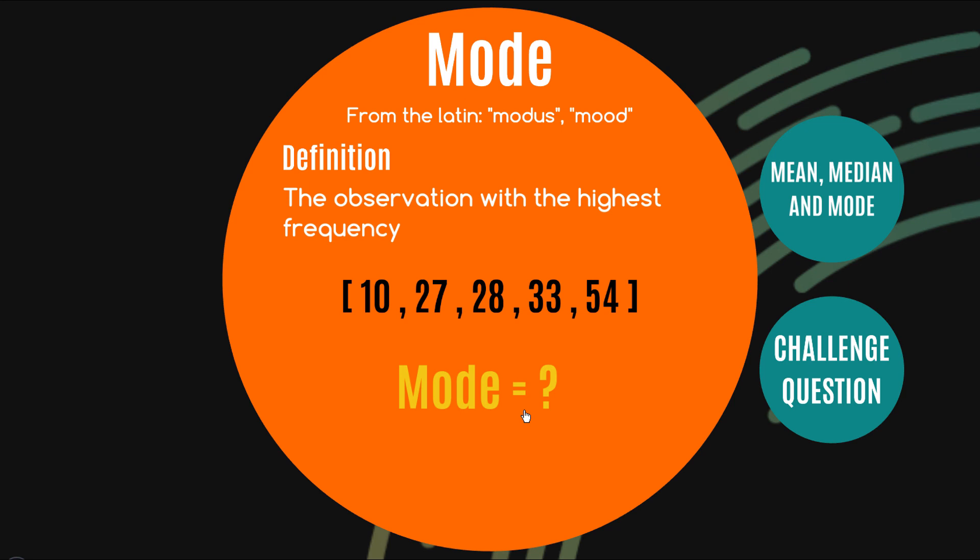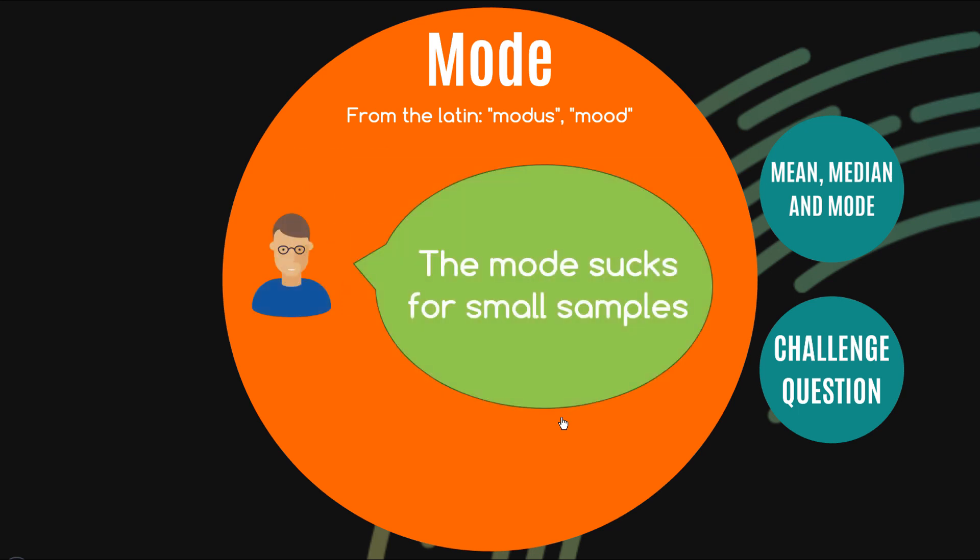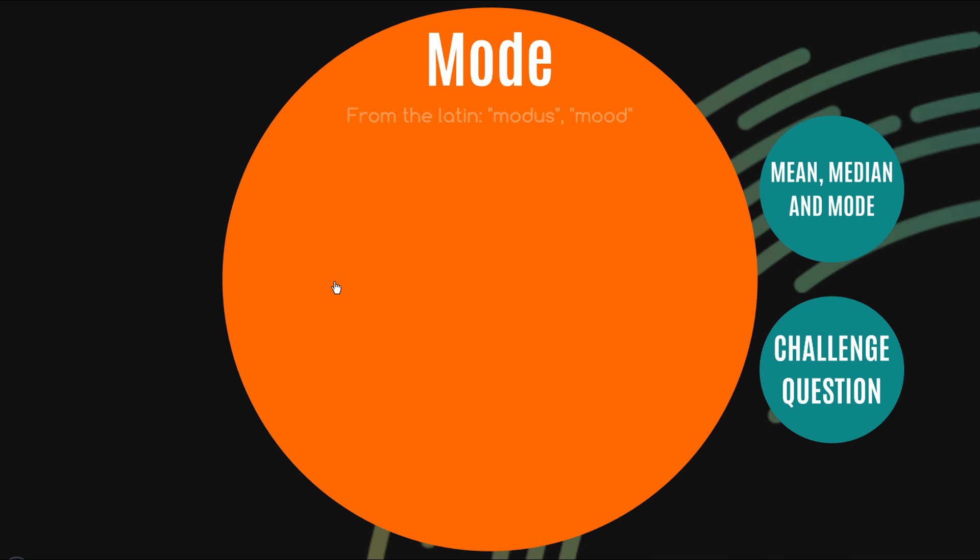And if I created a data set that just again had, by chance, two observations that were the same up on the high side up here, well the mode's going to be 54. And is that really the greatest representation of the central tendency of this data set? Probably not, right? So as I said, the mode sucks for small samples. Of course, this little icon being the best representation I have of me available doesn't really look like me, but I do respect the lack of arms on the glasses. I might try to make that my own little fashion statement.